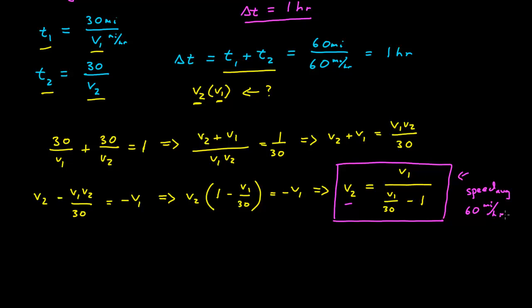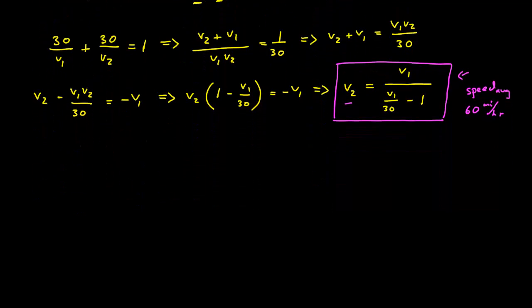So if we were to look at just some specific values of this, we find that we can put this into a calculator or a program to do the graph. But if we just look at some values, we find that if V1 is equal to 90, V2 is 45. If V1 is equal to 60, then V2 is equal to 60. If V1 is equal to 50, then V2 must be equal to 75. V1 is 40, V2 is 120. So what's happening here?